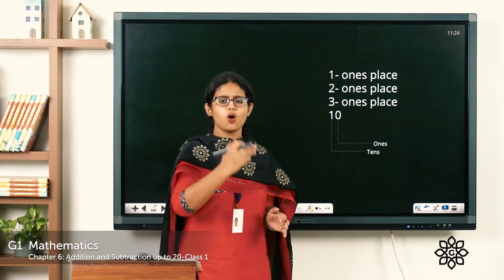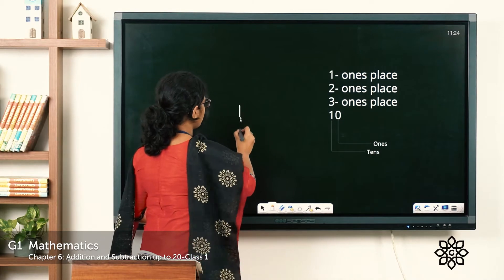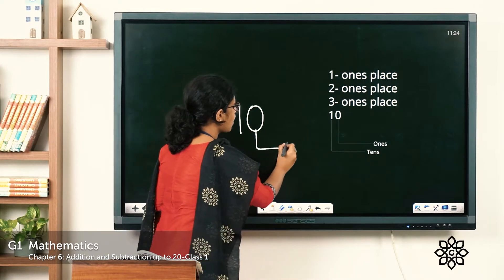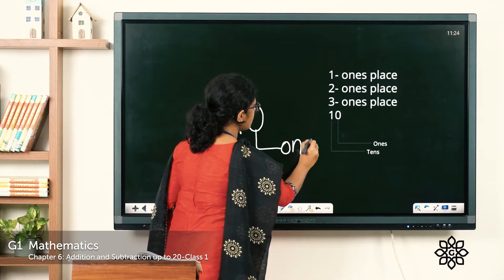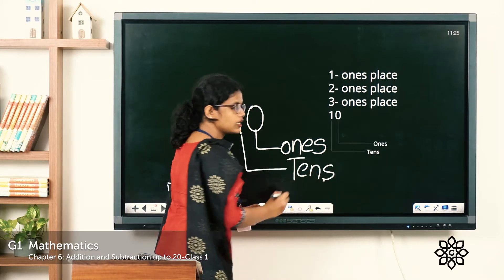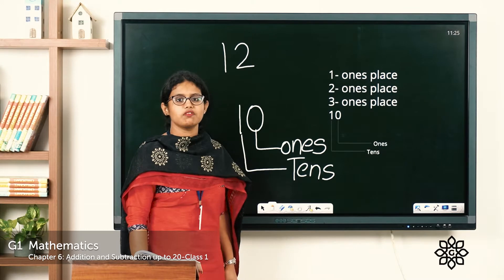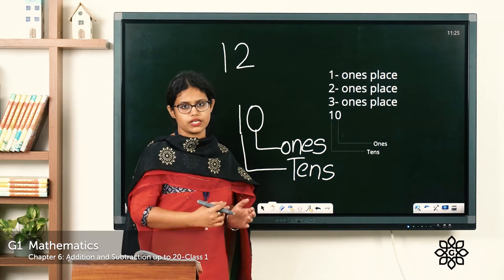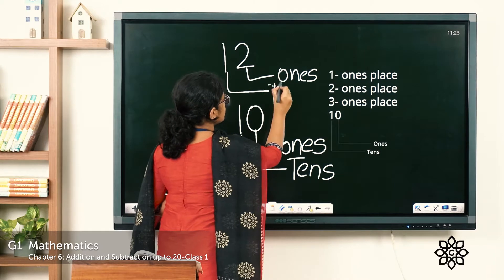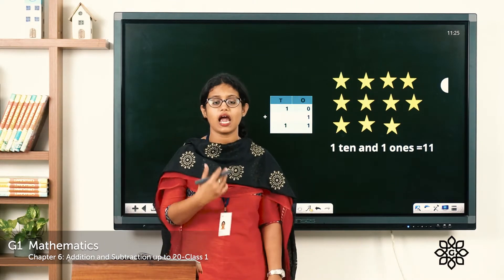All one digit numbers come in the ones place. What about number ten? Ten has two digits — zero comes in the ones place and one comes in the tens place. Another number, let's take twelve: two comes in the ones place and one comes in the tens place. Now let's do addition — adding two numbers by grouping by ten.